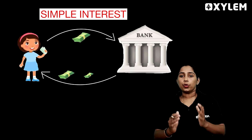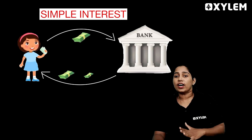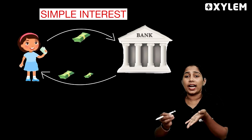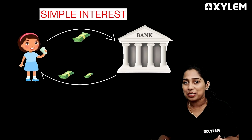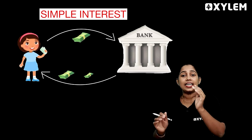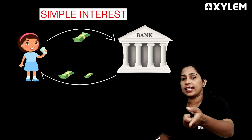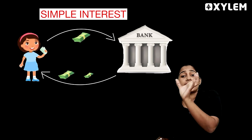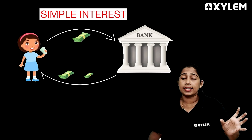You have to get a hundred thousand dollars. One day, if you want to get a hundred thousand dollars, I will get a hundred thousand dollars. That's what it means — it means that you have a hundred thousand dollars. That's what you have to do with the price.